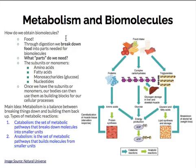Overall, metabolism is a balance between breaking things down and building them back up. There are two main types of metabolic reactions. Catabolism is the set of metabolic pathways that breaks down molecules into smaller units. Anabolism is the set of metabolic pathways that builds molecules from smaller units. An easy way to remember catabolism is to think of the letter C for 'cut' — catabolism is breaking things down.